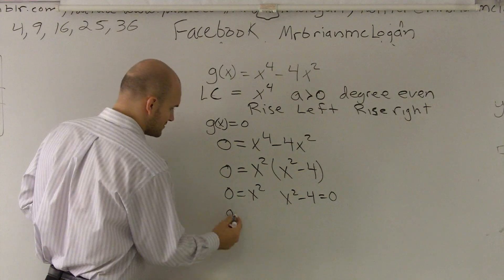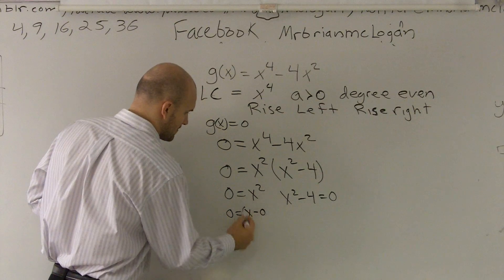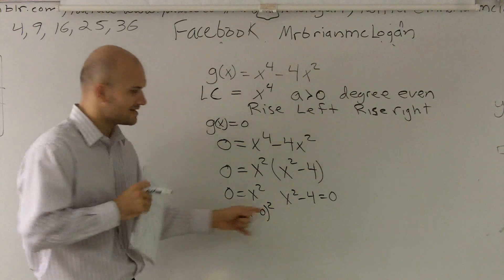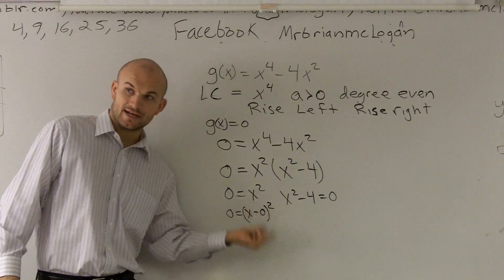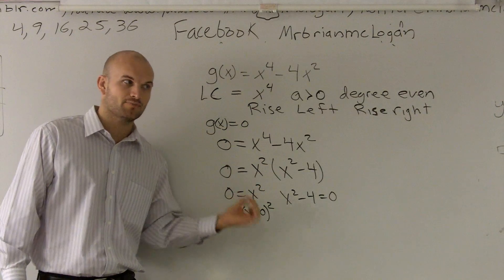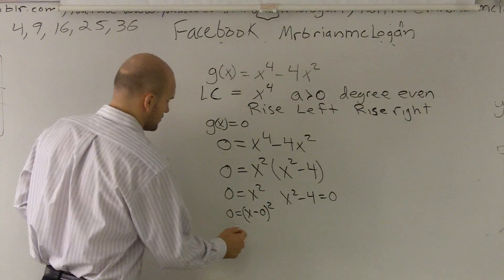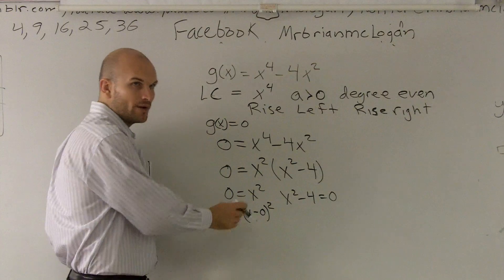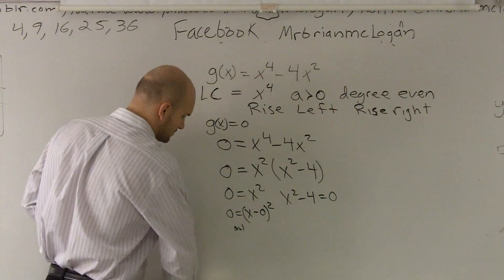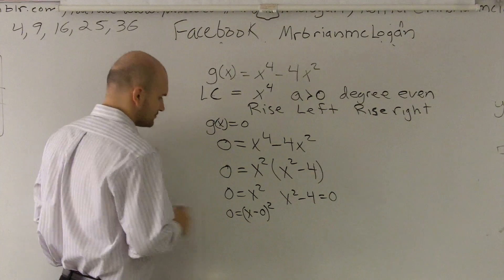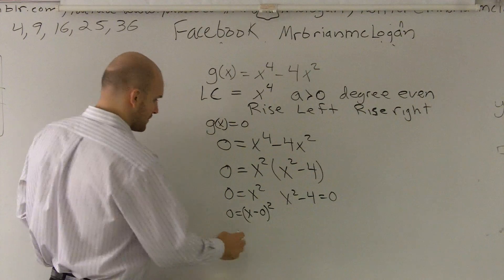I could write this like this. That's the exact same thing. Remember, whenever you have your factor and it's squared, we know it's going to be a multiplicity of 2. Or when it's squared, it's to the fourth power. Whenever it's to an even power, we're going to have a multiplicity of 2. So let's just write in. And that's going to become very helpful when we're graphing this.